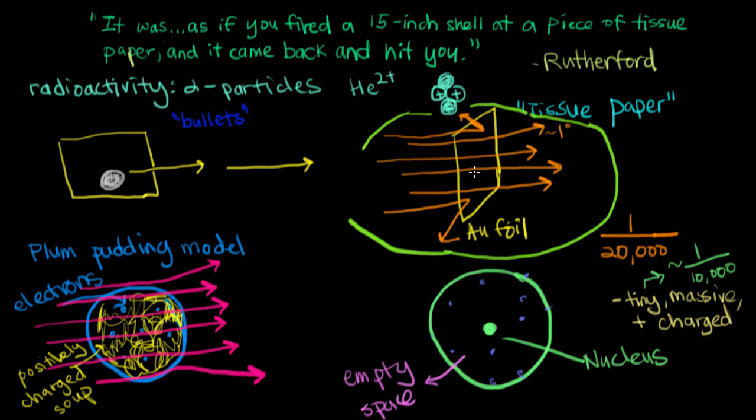Based on this particular model that Rutherford made, he was able to explain his results. Most of the alpha particles just went straight through. And then every now and then, an alpha particle would come really close to the nucleus and get deflected a little bit. And even more rare, an alpha particle may hit the nucleus straight on and get bounced off because the nucleus is super heavy and positively charged. Rutherford called this the nuclear model.